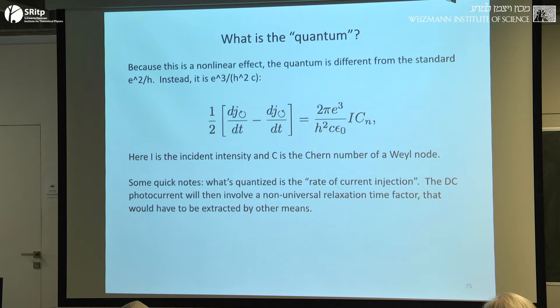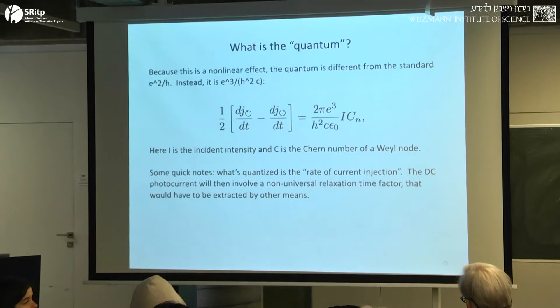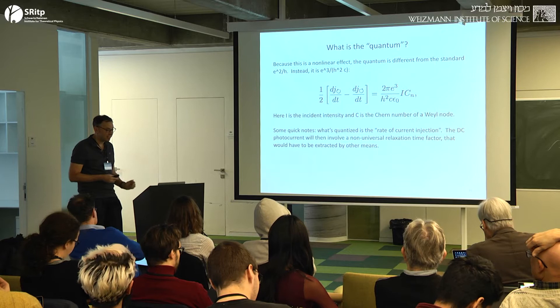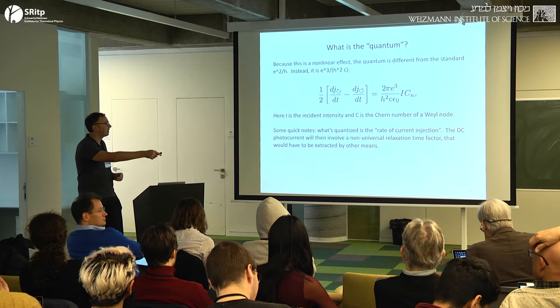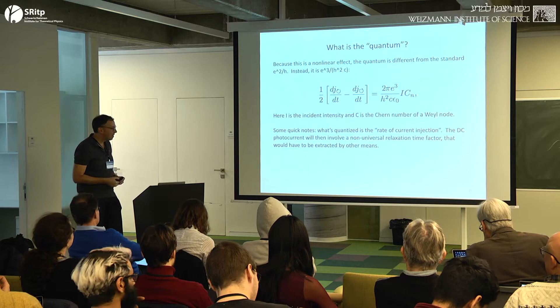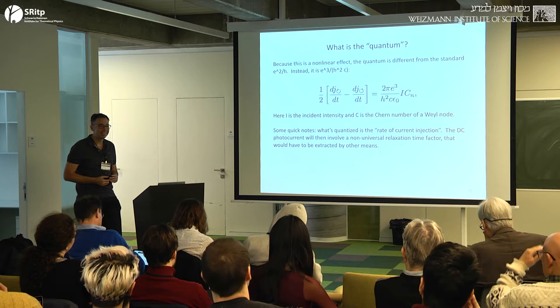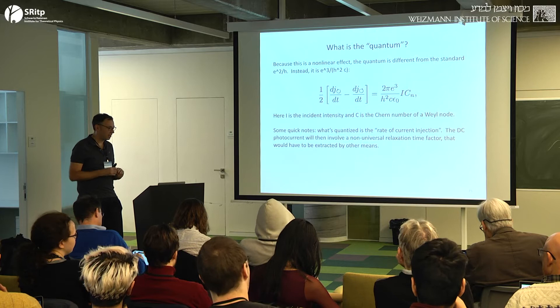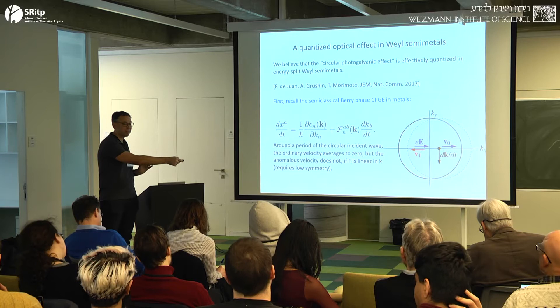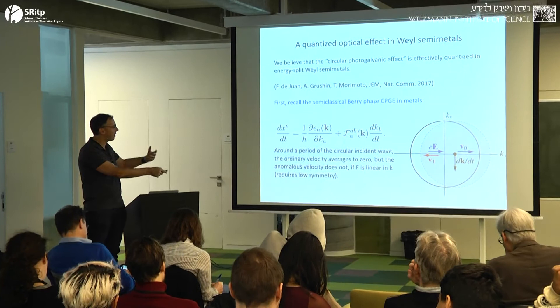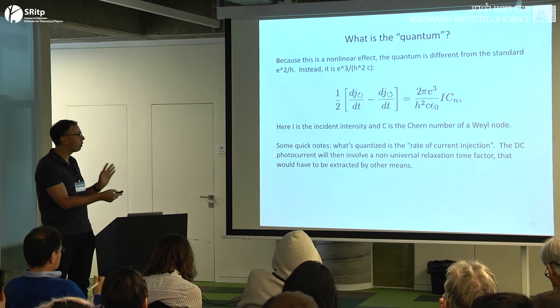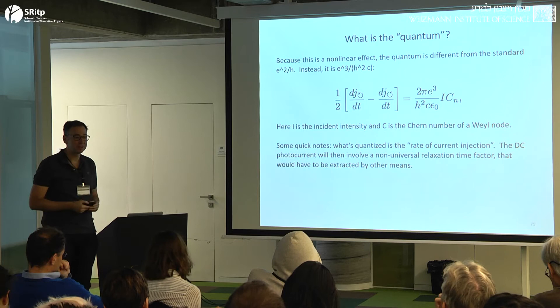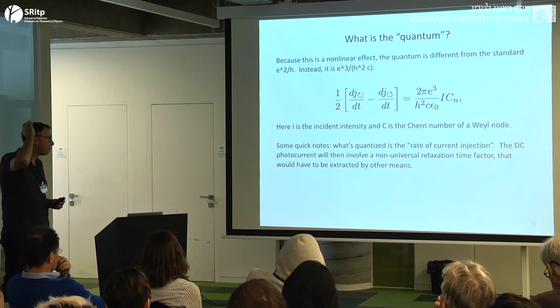Tantalum arsenide, the main Weyl semimetal that people have studied, has remarkably strong second-order optics, but it's not this effect - that material actually has too many mirror planes to have this effect. This would be a little bit more fundamental and somewhat more surprising because this is about 50 times larger than is normally seen for the circular photogalvanic effect. So it would be a nice quantized non-linear optical effect - as far as I know, the first one. This is not protected by anything, basically - it's got power law corrections in tau and is susceptible to interactions. The natural scale is still: if someone saw this within 50%, we would not be disappointed - we would be jumping up and down in happiness because it would still be 25 times larger than this effect has been in other materials.